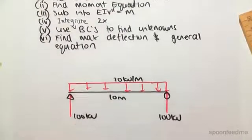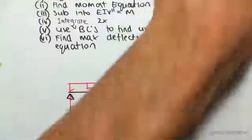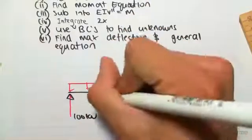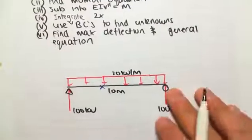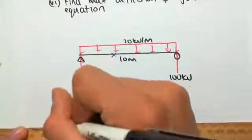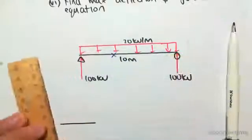Point one done. Point two, we now want to find the moment equation. For this particular case, because it's very simple, we're just going to be taking one cut. One cut will satisfy this problem to find the moment. There's only one moment equation, so if we take a cut, which I'll do down here.